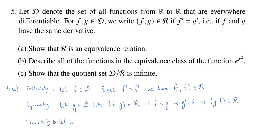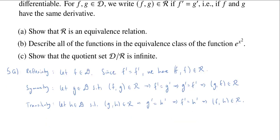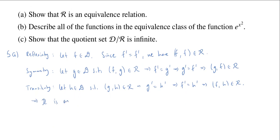For transitivity, I need a third function. Let h be in D such that — I've already assumed (f, g) ∈ R — now I also assume (g, h) ∈ R. This implies g prime equals h prime. We have f prime equals g prime and g prime equals h prime; put those together by the transitivity of equality: f prime equals h prime, and that implies (f, h) ∈ R. This finishes showing that R is an equivalence relation.